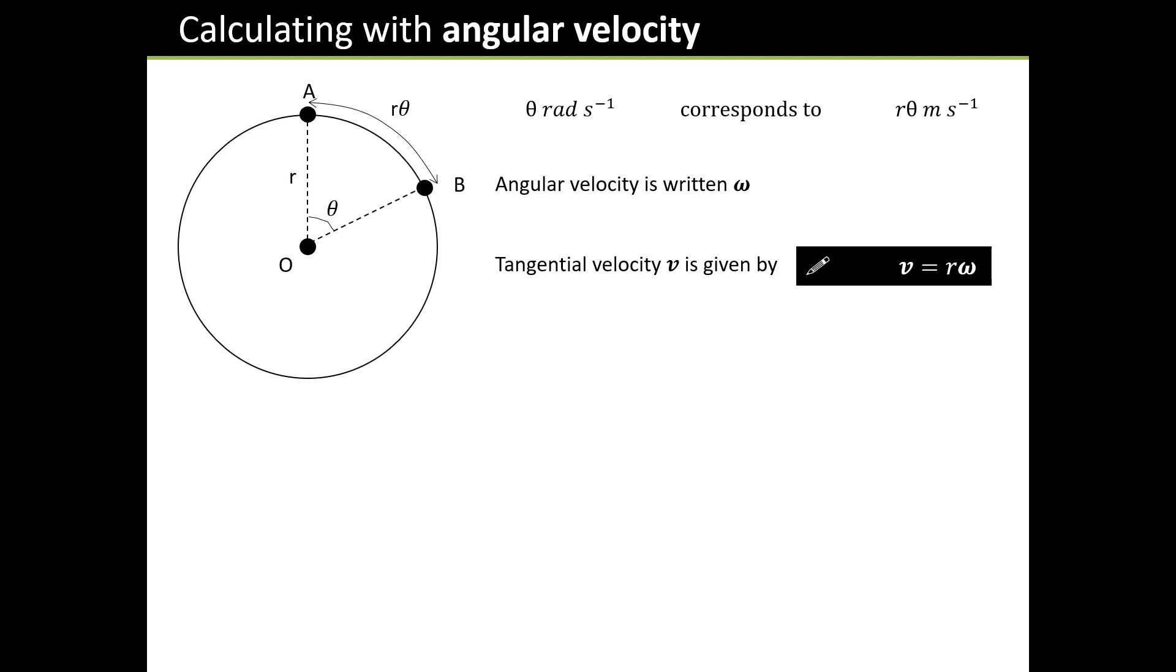A couple of notes about this. If angular position is defined as θ, angular velocity is simply the rate of change of θ with respect to time, or dθ/dt. And the shorthand way of writing dθ/dt is θ̇, because mathematicians are lazy and can't be bothered writing lots of stuff down.